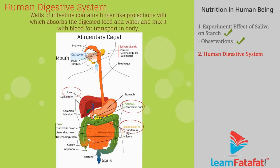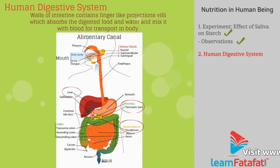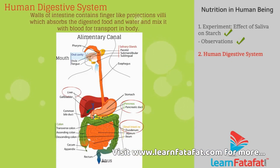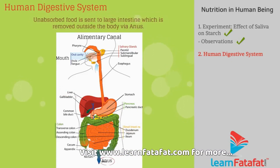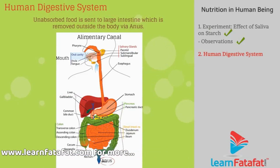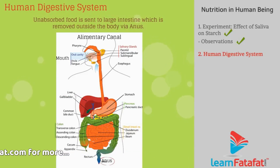Walls of the intestine contain finger-like projections which absorb the digested food and water and mix it with blood for transport in the body. Unabsorbed food is sent to the large intestine, which is removed outside the body via the anus.